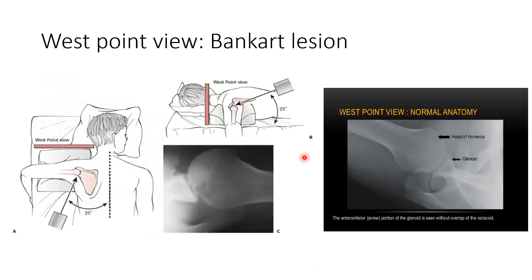The West Point view: the patient is in supine position, the beam is angled 25 degrees from center and 25 degrees downward with the cassette placed at the superior part of the shoulder. This view can visualize the glenoid to look for any Bankart lesion.